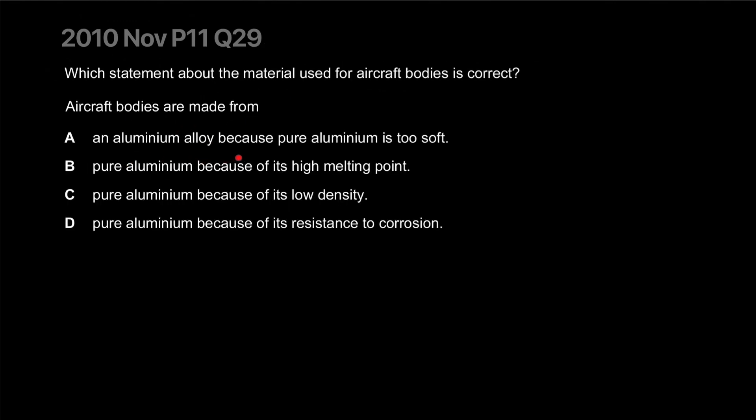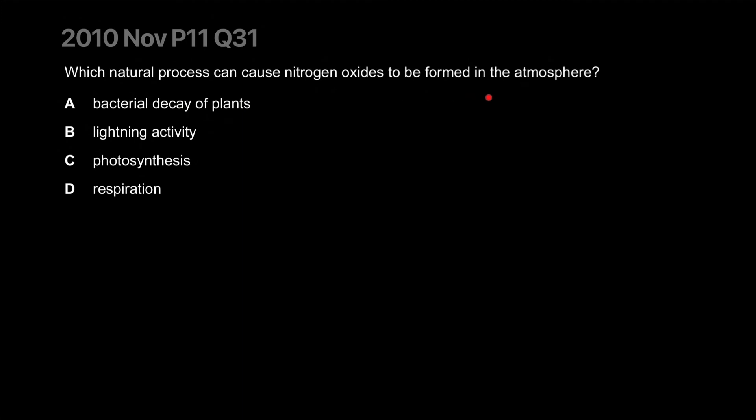Aircraft bodies are made from an aluminum alloy because pure aluminum is too soft - that's true. Have you seen aluminum? It's pretty soft. But it's actually very light and also very resistant to corrosion, so it makes ideal material. You'll never see rust on an airplane. Pure aluminum because of its high melting point - aluminum actually doesn't have too high of a melting point. But it's not pure aluminum, and that is the reason it's correct. That's also a good value addition to our airplane material management.